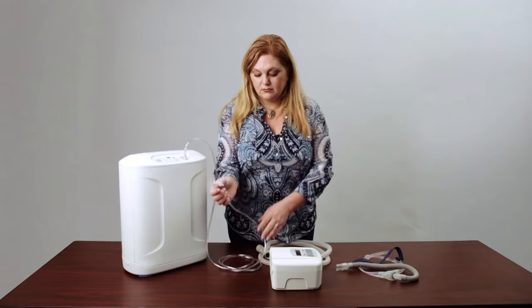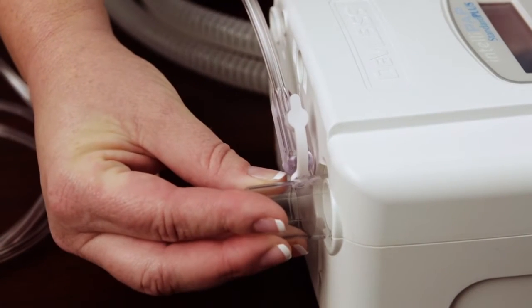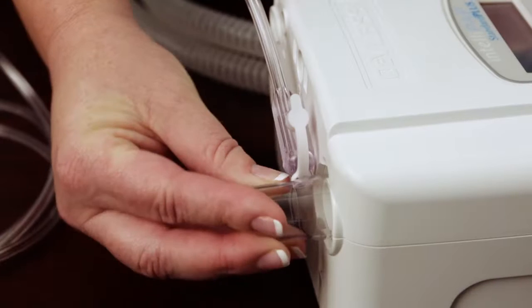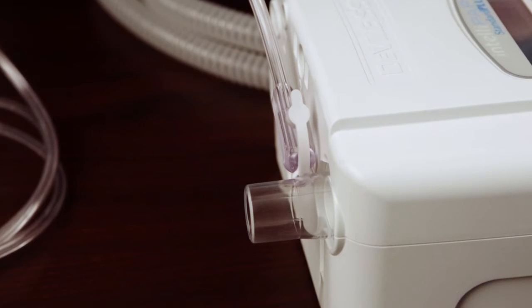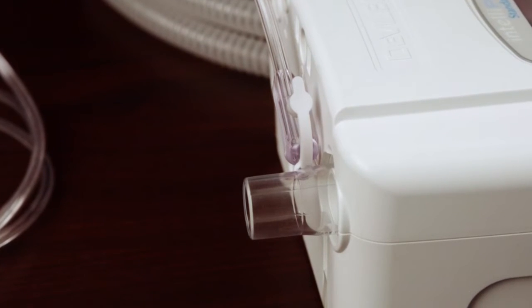Connect the oxygen bleed-in adapter with the oxygen tubing attached to the air pressure outlet on the CPAP machine. The large opening on the adapter will fit directly onto the CPAP machine.